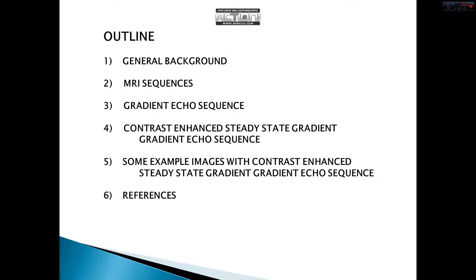This is my outline. Firstly, I will talk about some background information about MRI. After that, I will mention MRI sequences and some special types of it. Then I will talk about gradient echo sequence, the main family of my subject. After that, I will mention contrast enhanced steady state gradient echo sequence, and finally I will show some example images obtained with this technique.